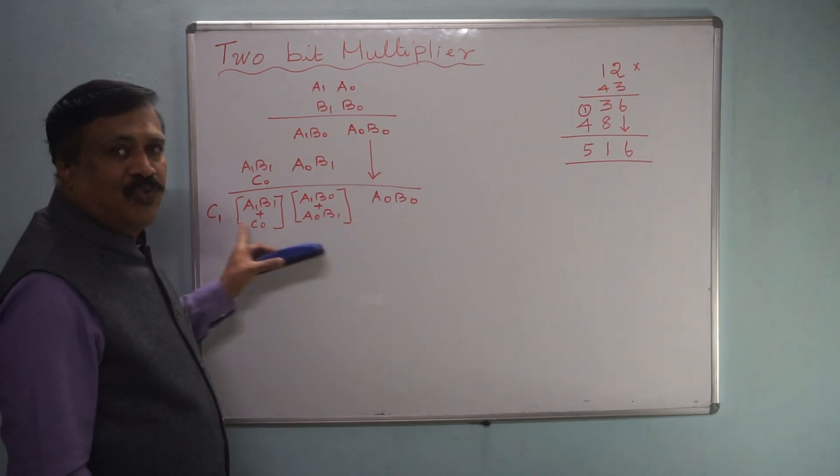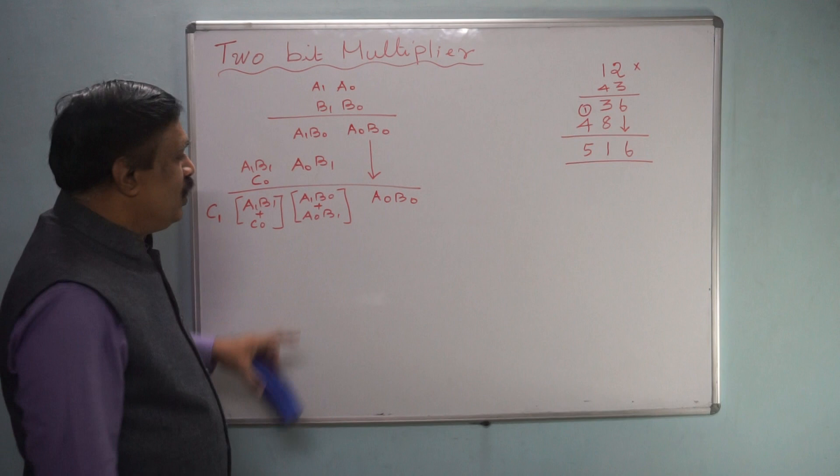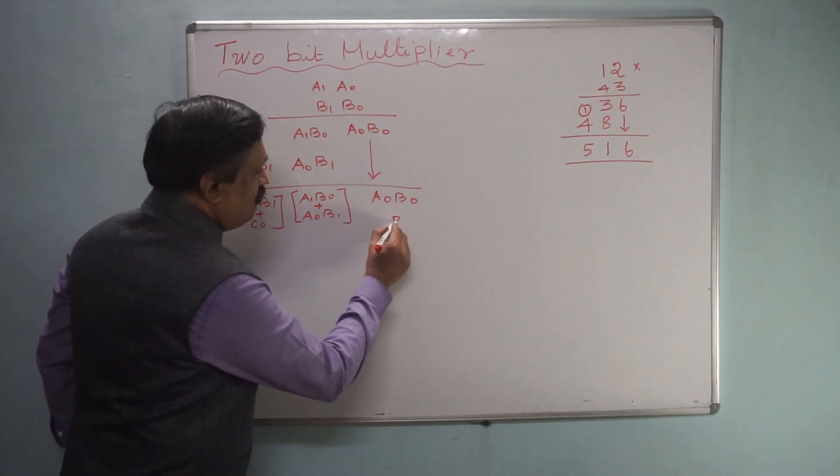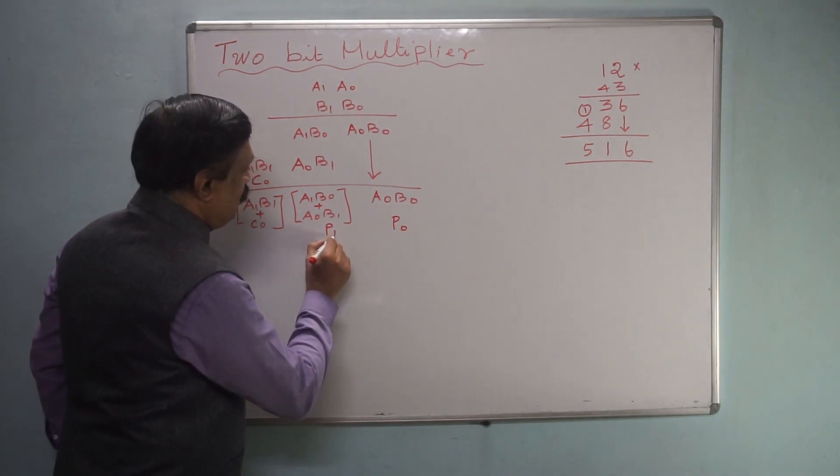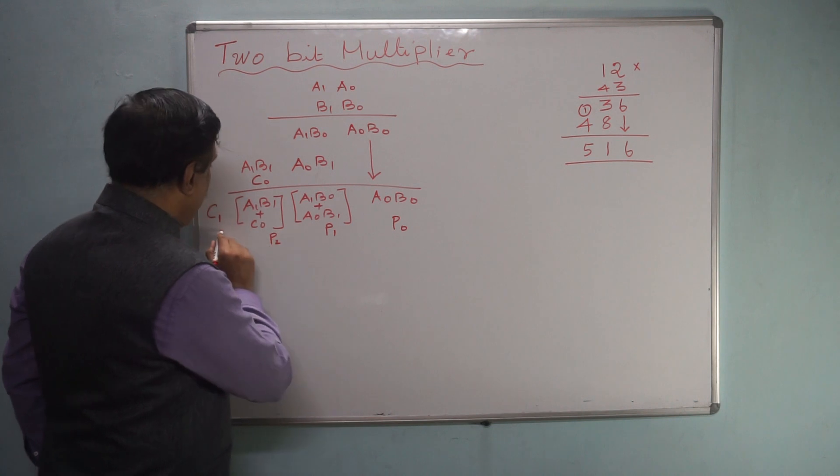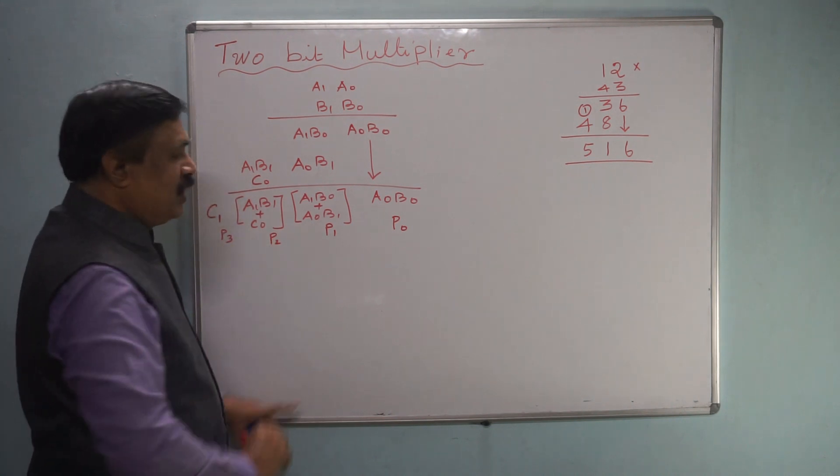Now this is your 4-bit number, that means your product. You can name it as a P0 and a P1, P2 and P3. Final product.